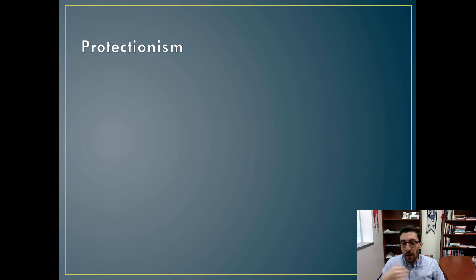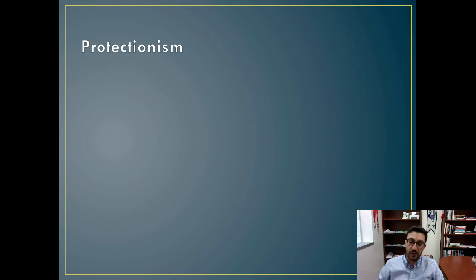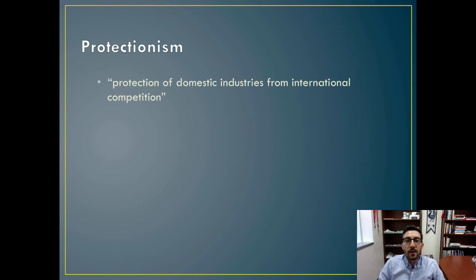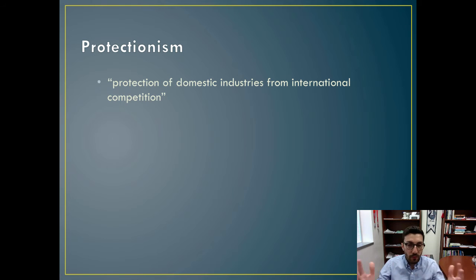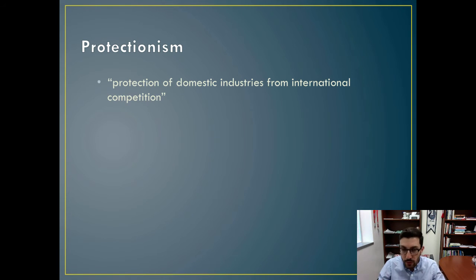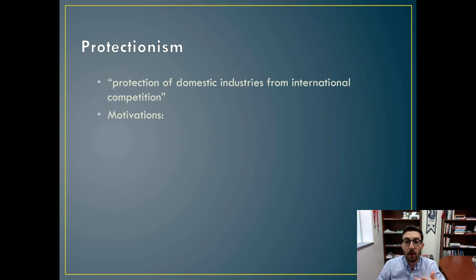Part and parcel to this discussion of market imperfections is a discussion about protectionism — the protection of domestic industries from international competition. This sounds like something you wouldn't want to do in a free market capitalist system, but we regularly see this all throughout the world. So why do we see protectionism at all? There are several reasons.